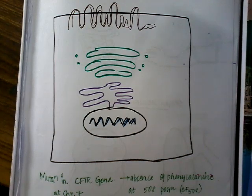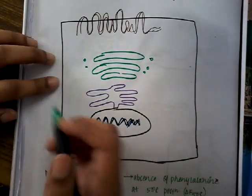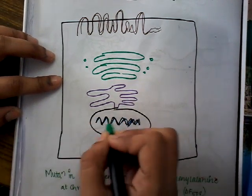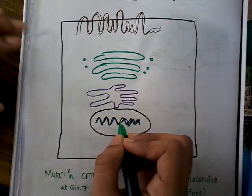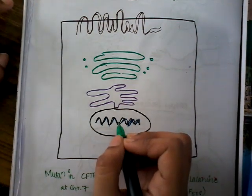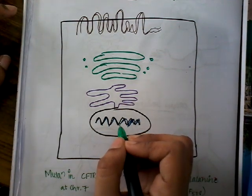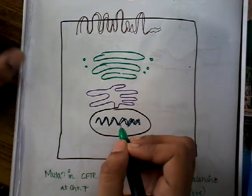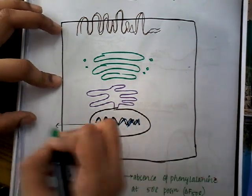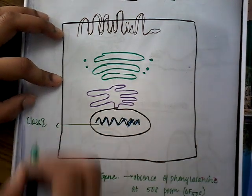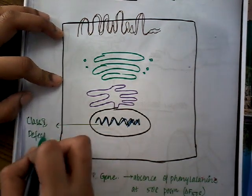Whenever there is some obstruction at any point in this pathway, it may lead to cystic fibrosis. When there is defective protein synthesis — that is, a defect in the transcription or translation process from DNA to RNA to protein — it is classified as Class 1, where there is a defect in protein synthesis.